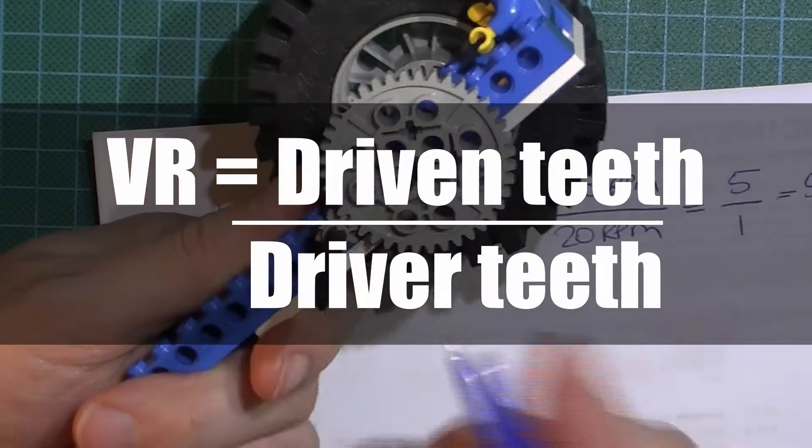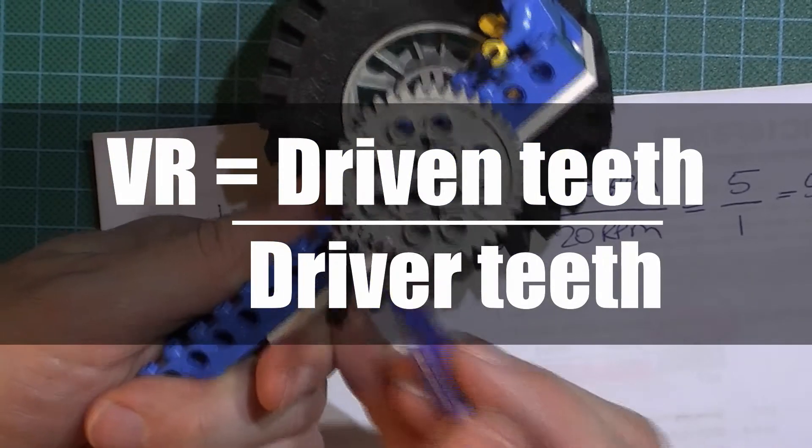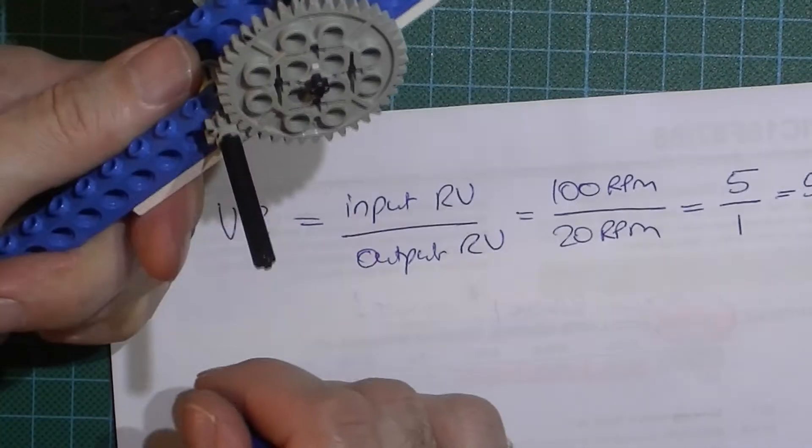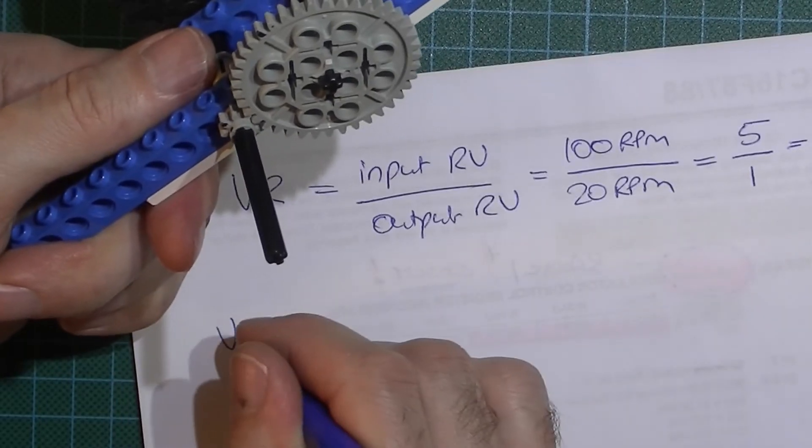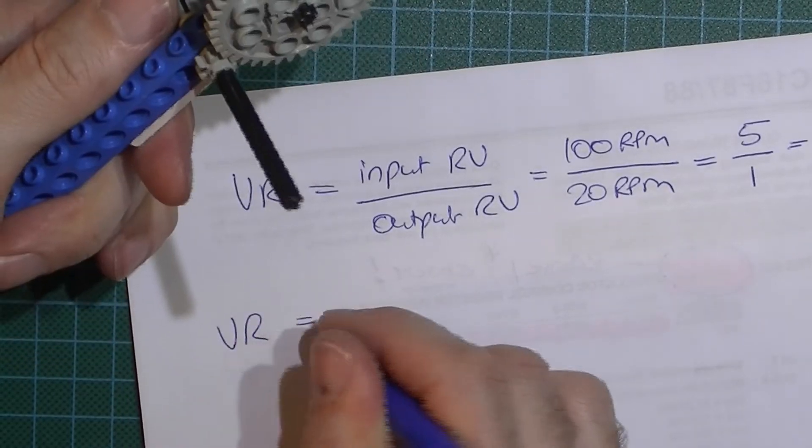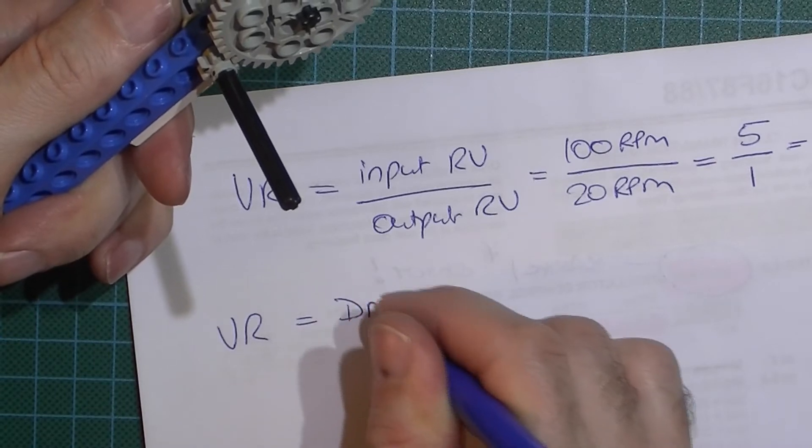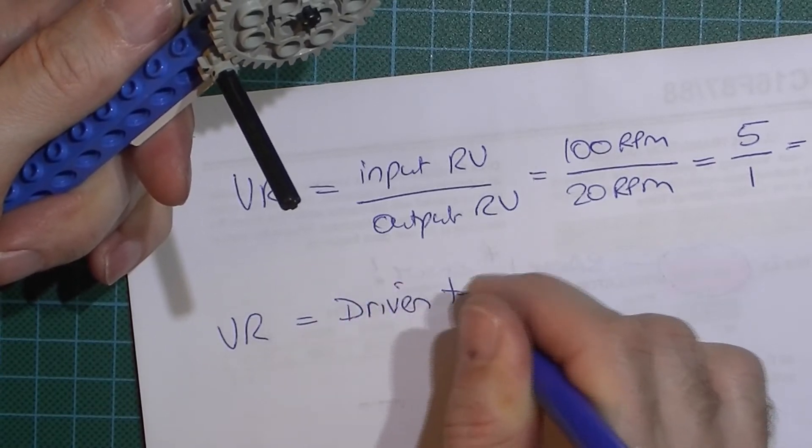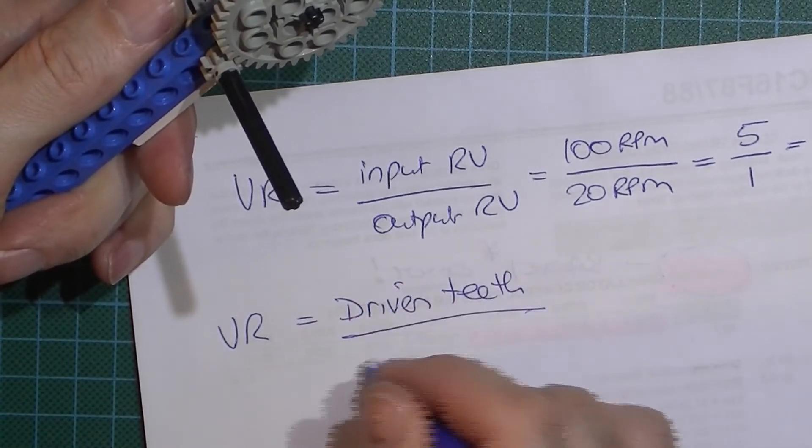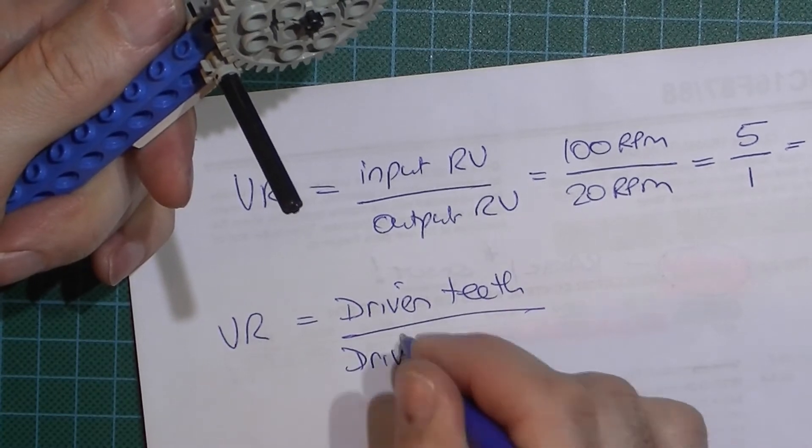In the case of a spur gear, you just count the number of teeth on the input and the teeth on the output. And this time around, the velocity ratio will be equal to the driven teeth over the driver teeth.